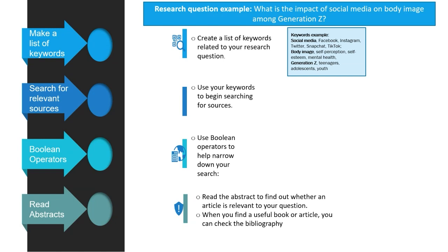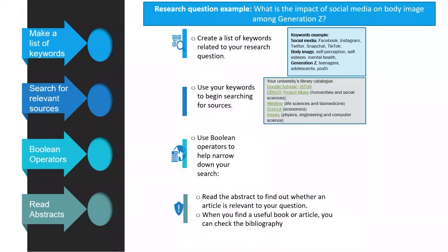Then you search for relevant sources using your keywords. Your university library's catalog is a good place to start, along with Google Scholar, JSTOR, EBSCOhost, and Project Muse for humanities and social sciences. For life sciences and biomedicine there's MEDLINE, for economics EconLit, and for physics, engineering, and computer science, InSpec. UNISA library also offers a service to help students embarking on PhDs and masters with their literature review, and there will likely be library workshops on navigating these different search engines.